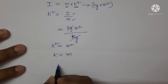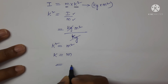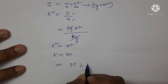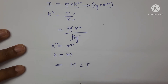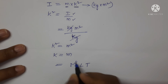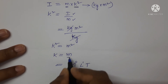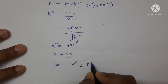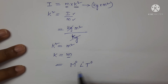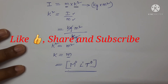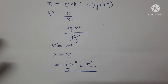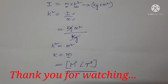Now, express the dimensional formula in terms of M, L, T format. Here, the mass term is absent, so M power 0. Only the length term is there, so L power 1, and the time term is also absent. This is the dimensional formula for radius of gyration. If you like the video, please do like, share and subscribe. Thank you for watching this video.